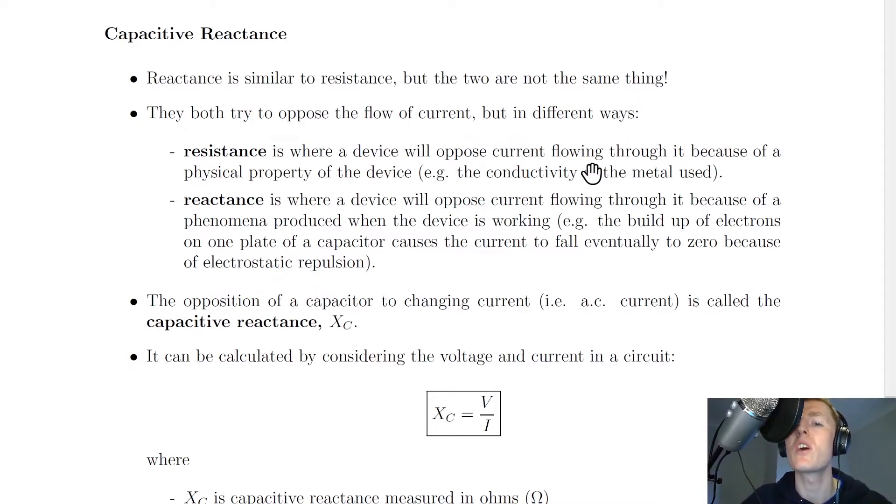Resistance is where a device will oppose current flowing through it because of a physical property of the device. For example, the conductivity of the metal used.